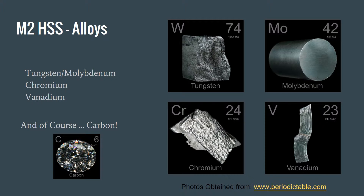The main alloying element used in high speed steel is either tungsten or molybdenum. Given that tungsten is rarer than molybdenum, molybdenum usually replaces a large amount of tungsten. Both of these elements are used to create double carbides within the steel. Another alloying element used is chromium, which allows for more hardenability and better heat treatment.